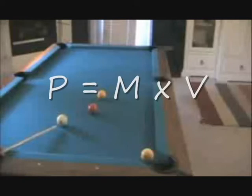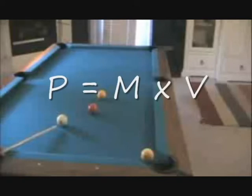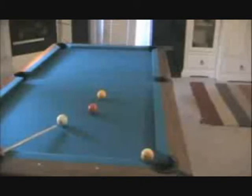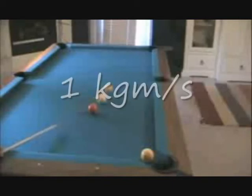An object's momentum is calculated by multiplying its mass and its velocity. A pool ball of 1 kilogram traveling at 1 meter per second will have a momentum of 1 kilogram meter per second.